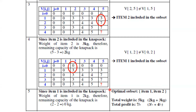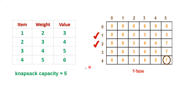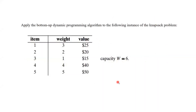This concludes the discussion of solving the knapsack problem using the dynamic programming approach. Here is one more practice example: knapsack capacity is five again but with different weights and values. The final matrix is provided — follow the procedure discussed in this session to obtain it yourself, and verify that items one and two are selected as the answer.